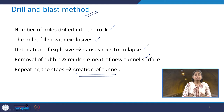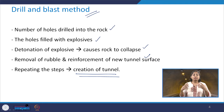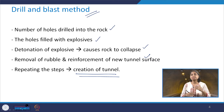As the name suggests, in the drill and blast method: first we drill holes into the rock, then we charge them with explosive, then detonation takes place, the rocks collapse, the rubble is removed, and then reinforcement of the new tunnel surface is done. These steps are repeated to create the tunnel.